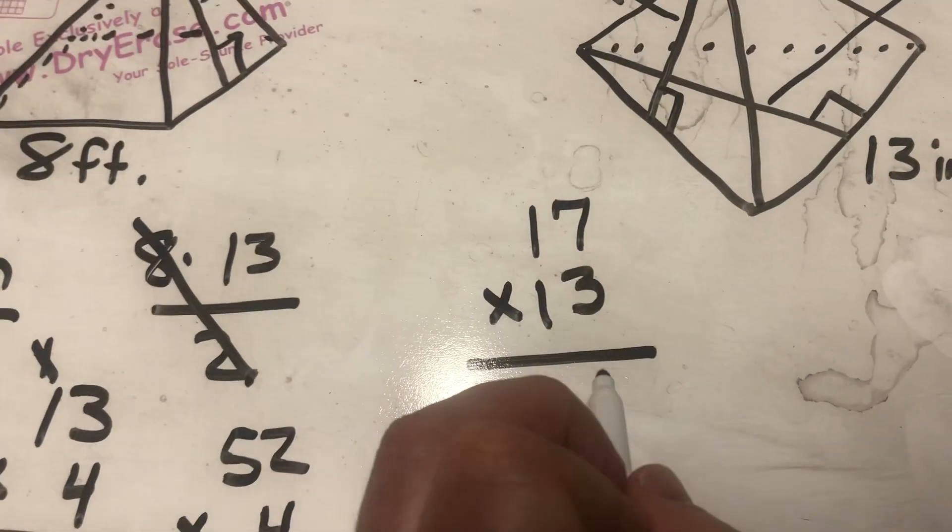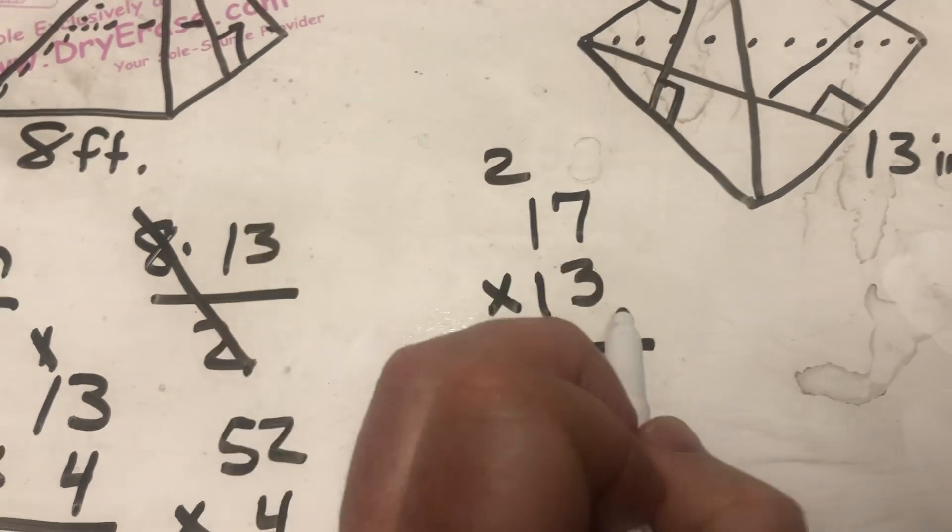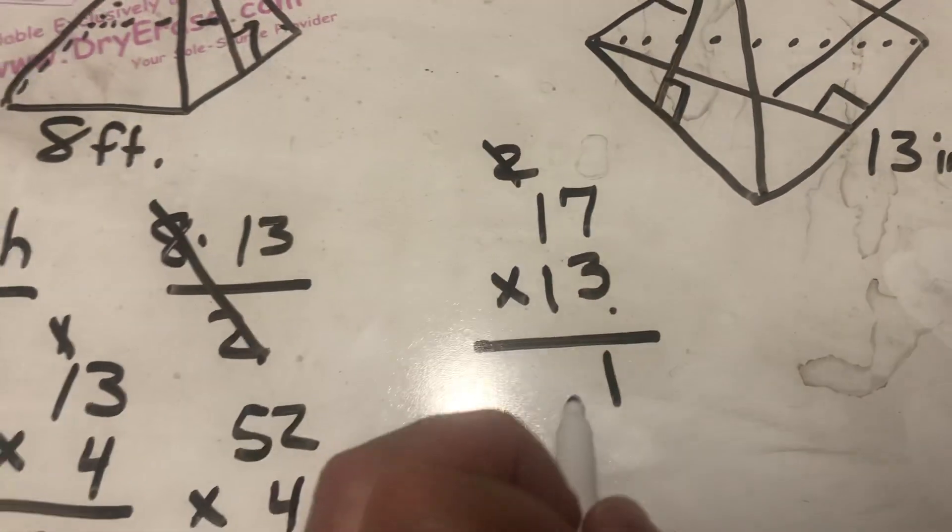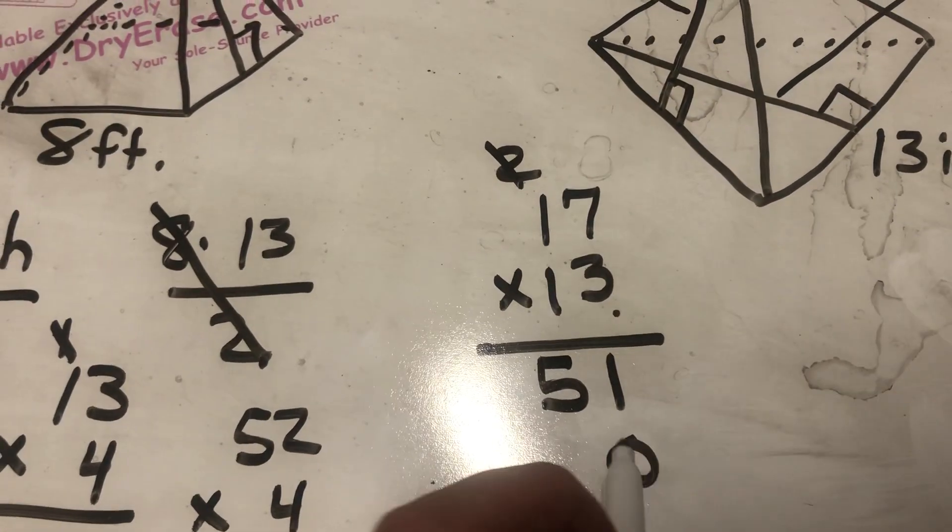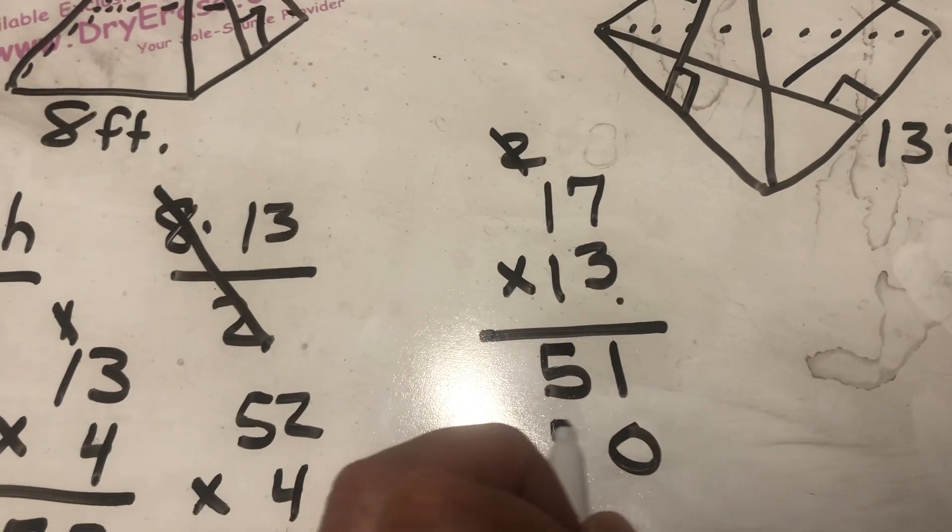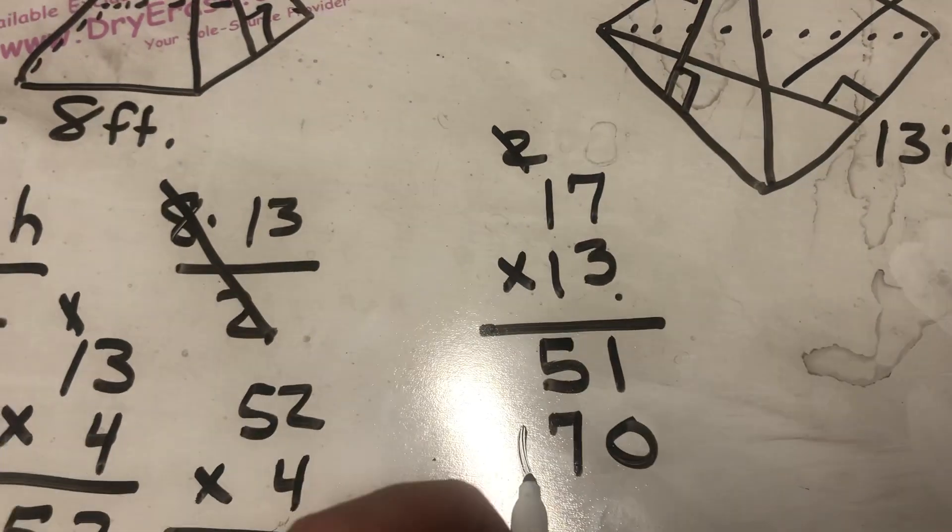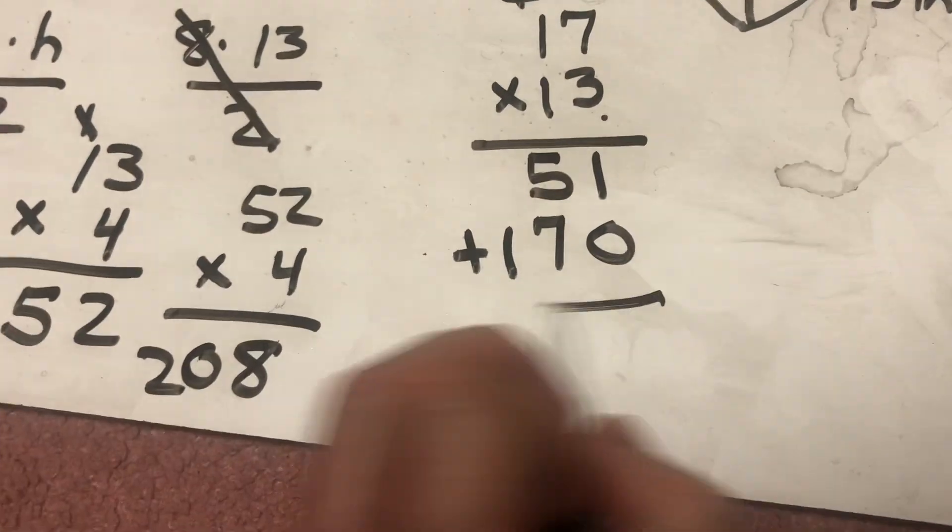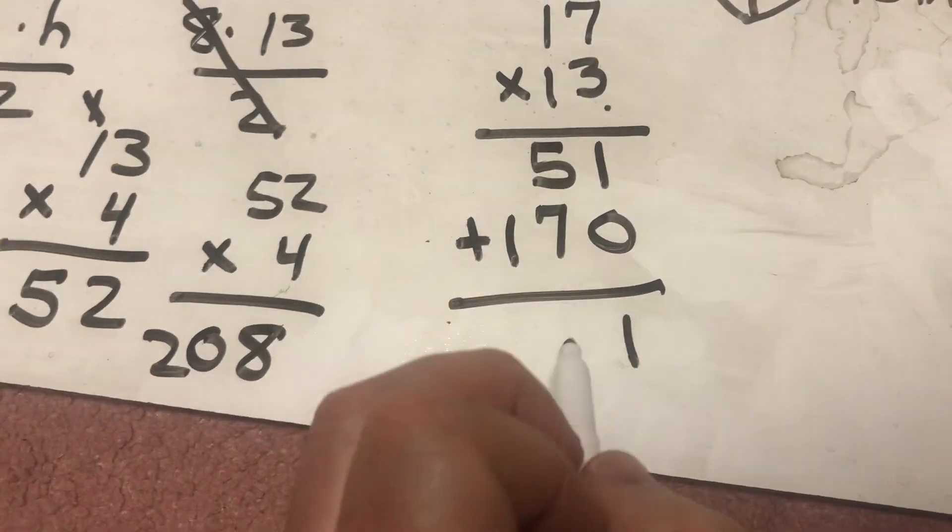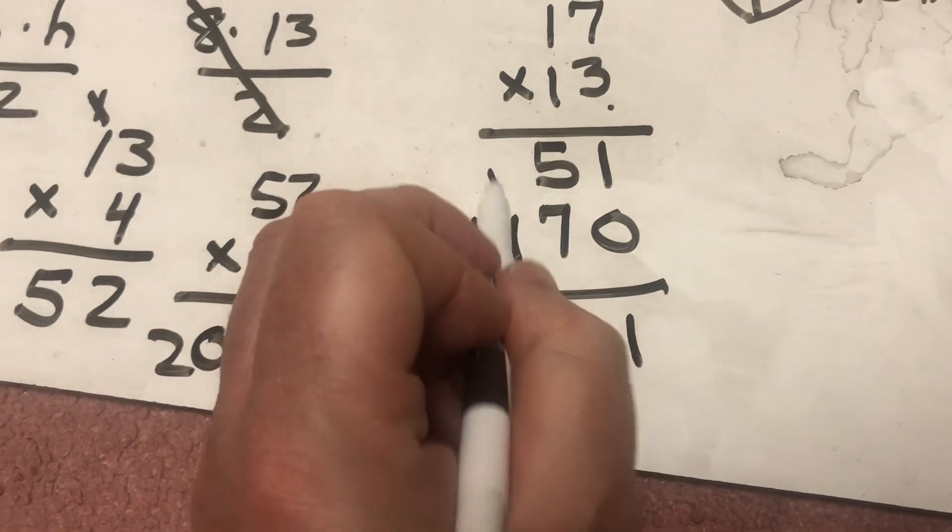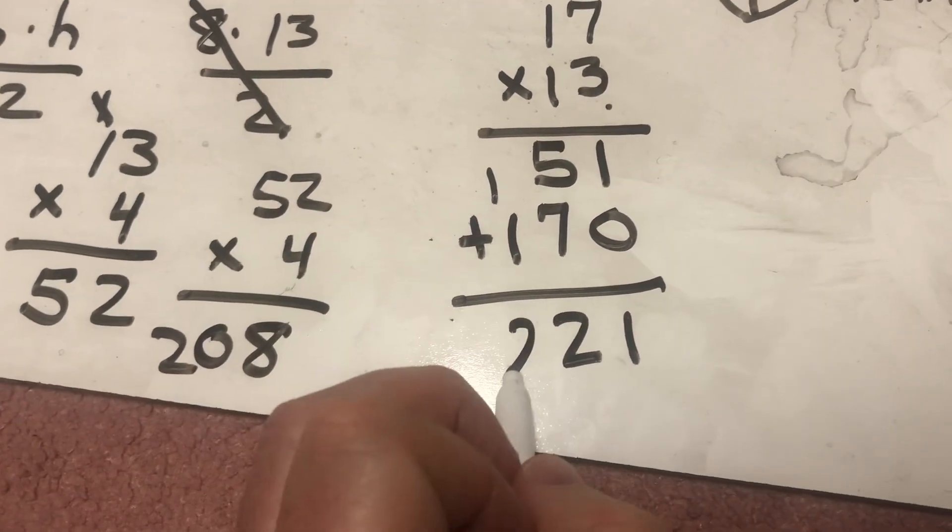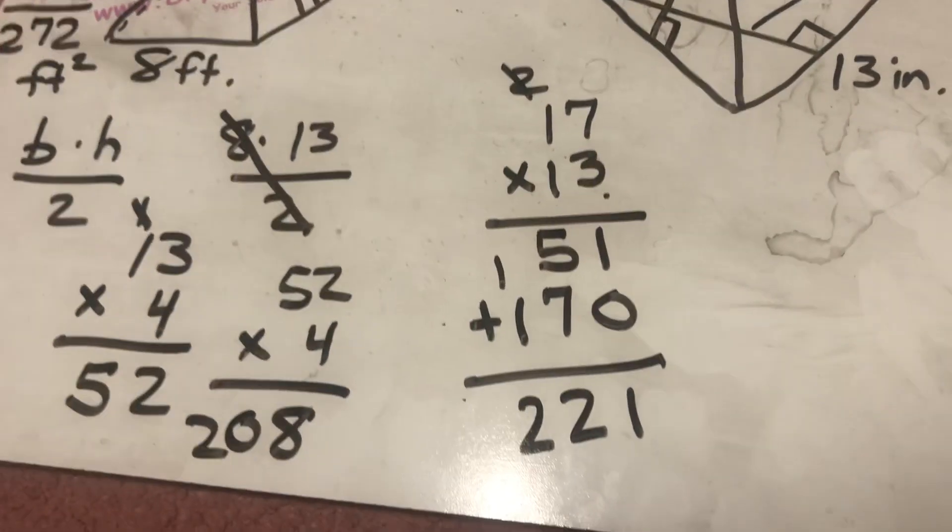3 times 7 is 21. Put the 1 down, carry the 2. 3 times 1 is 3, plus 2 is 5. Drop the 0. 1 times 7 is 7. 1 times 1 is 1. Add those together. 1 and 0 is 1. 5 plus 7 is 12. Put the 2 down, carry the 1. 1 plus 1 is 2. 221.